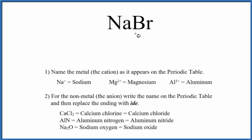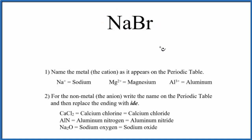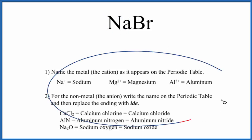To write the name for NaBr, we first need to realize what type of compound we have. Since sodium is a metal and bromine is a nonmetal, this is going to be an ionic compound. And since we only have two different elements, it's going to be a binary ionic compound. And we're going to use these rules to write the name.